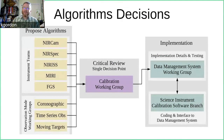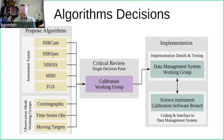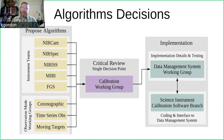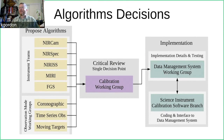How do we decide on the algorithms? One difference in JWST's approach is a critical review — a single decision point for all instruments — called the Calibration Working Group. We take all proposed algorithms from instrument teams and from three observing mode working groups: coronagraphy, time series observations (which supports exoplanet transits), and moving targets. We assess all these algorithms, consider multiple proposals from different groups, and use the broad expertise of the entire JWST project to come up with the best solution for each pipeline step.